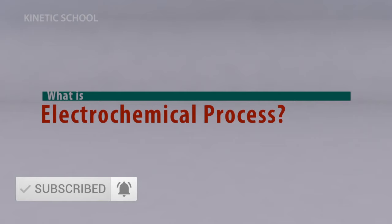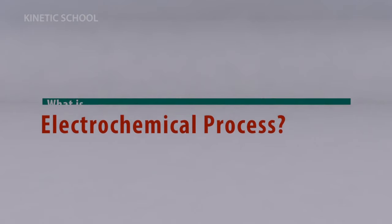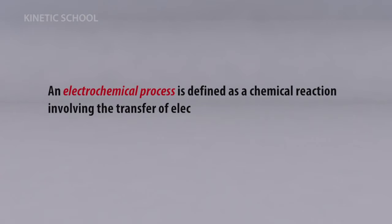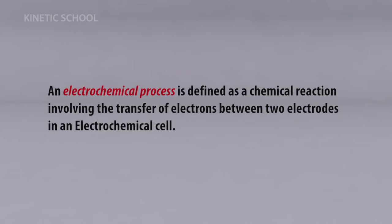What is an electrochemical process? An electrochemical process is defined as a chemical reaction involving the transfer of electrons between two electrodes in an electrochemical cell.